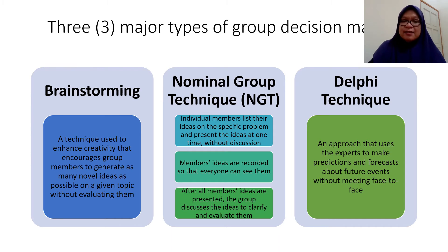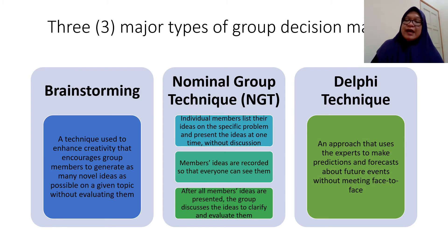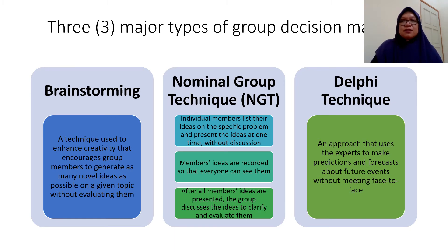The first type is brainstorming — a familiar and widely used technique. Brainstorming is a technique used to enhance creativity that encourages group members to generate as many novel ideas as possible. When we do brainstorming, all individuals or group members come up with ideas. The objective is to collect as many ideas as possible, and thinking in a group usually makes ideas better and more creative.